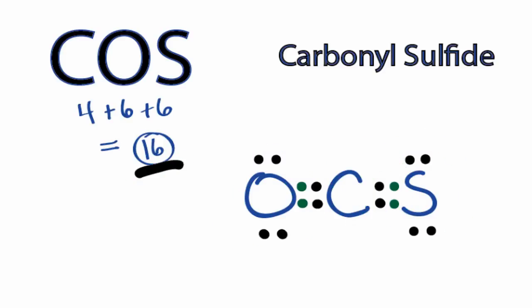That makes this the Lewis structure for COS. You might ask why I didn't form a triple bond between the oxygen and carbon or a sulfur and carbon. The reason is that oxygen and sulfur don't normally form triple bonds, and if I did that and checked my formal charges, I'd find that my formal charges would be plus 1 and minus 1 on the oxygen and sulfur. So, that wouldn't be the best Lewis structure for COS.